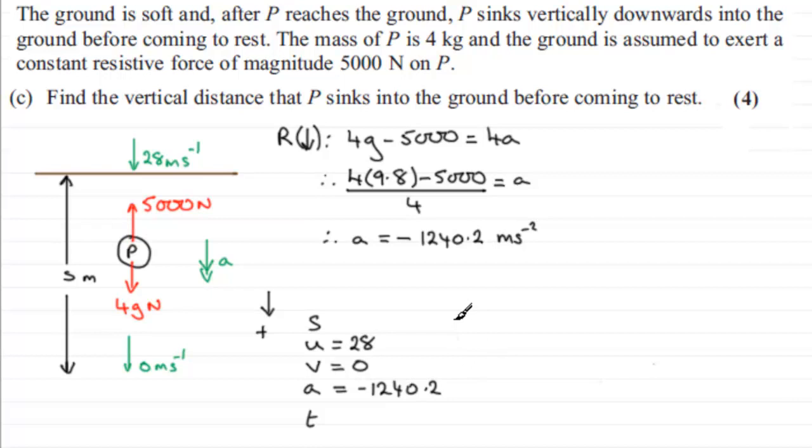So what equation would we use to connect S, U, V and A? Well it's got to be V squared equals U squared plus 2AS, an equation that you should be familiar with. So we've got V squared equals U squared plus 2AS. And we can fill these values in. V was 0, so we've got 0 squared. And it equals U squared, which is going to be 28 squared.